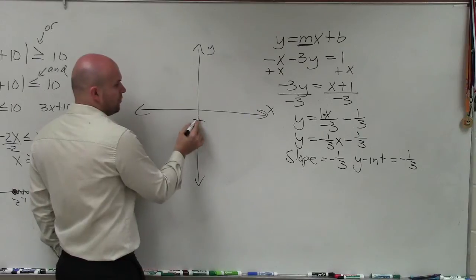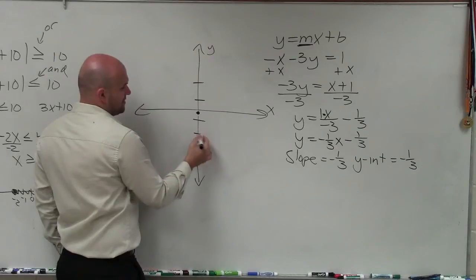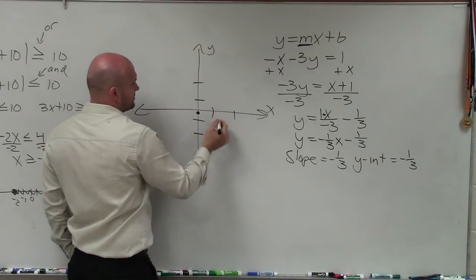So if I say here's 1, negative 1 third is going to be right here. Now this can be a little bit confusing.